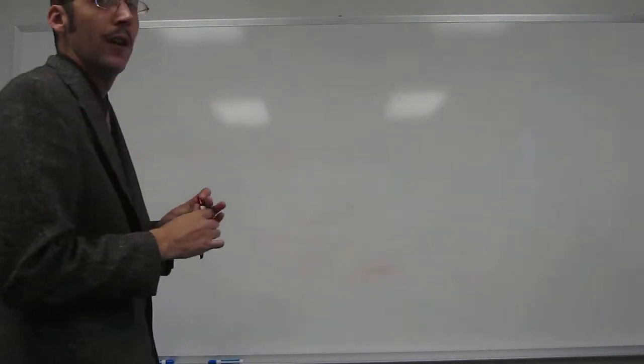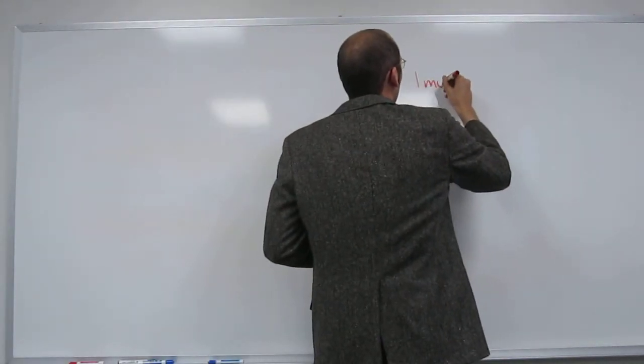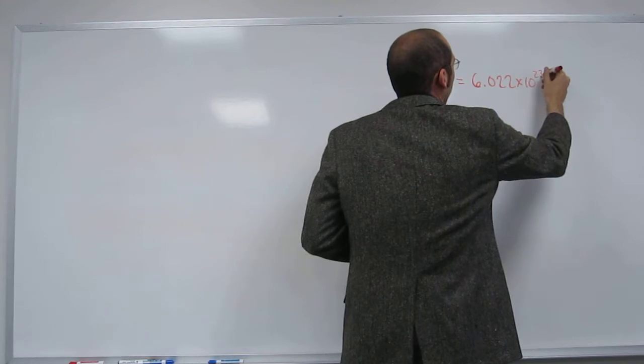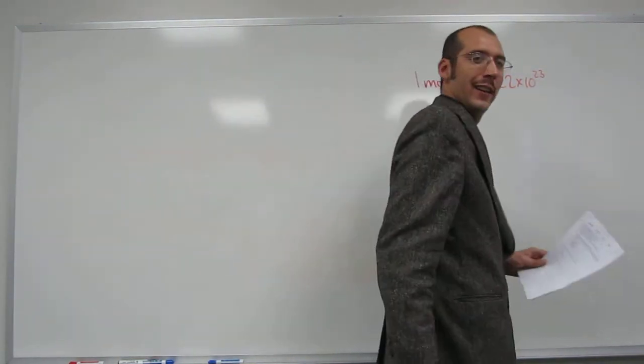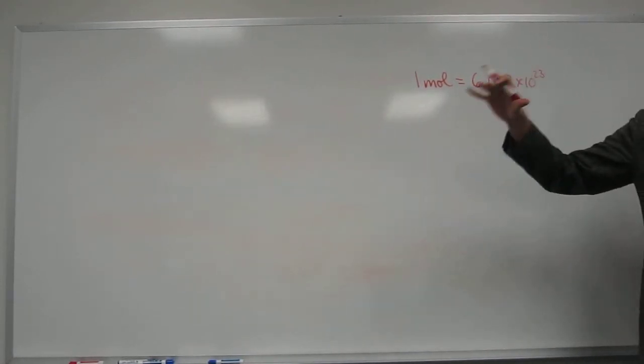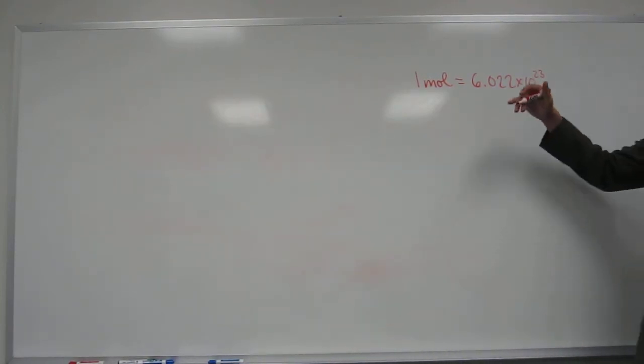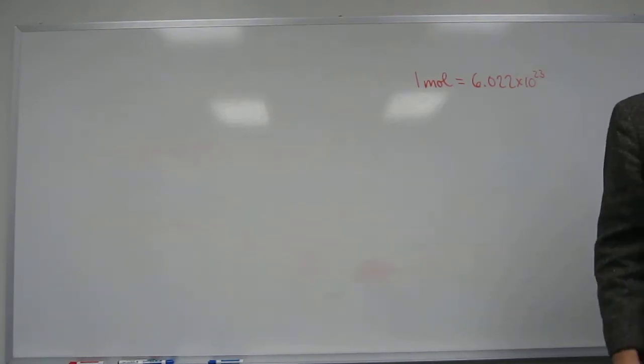One million argon atoms is blank moles of argon atoms. You know already what one mole is, how many things one mole is. You're talking about the Avogadro's number, 6.022 times 10 to the 23rd. Remember I told you that's just the number. If you think this is like chemistry then you're losing the battle with chemistry.